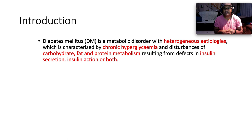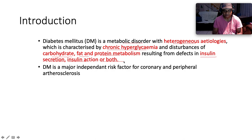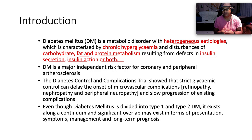According to SEMDSA — the Society of Endocrinology, Metabolism and Diabetes of South Africa — diabetes mellitus is a metabolic disorder with heterogeneous etiologies, characterized by chronic hyperglycemia and disturbances of carbohydrate, fat, and protein metabolism resulting from defects in insulin secretion, insulin action, or both. Diabetes mellitus is a major independent risk factor for coronary and peripheral atherosclerosis. The Diabetes Control and Complications Trial showed that strict glycemic control can delay the onset of microvascular complications — retinopathy, nephropathy, and peripheral neuropathy.